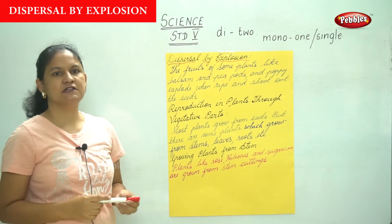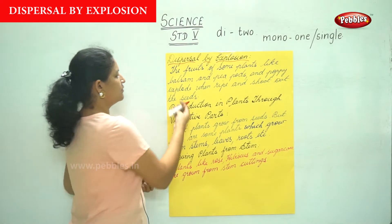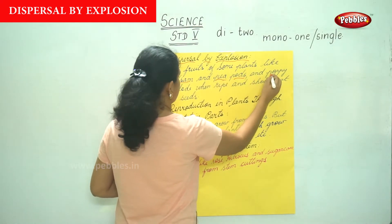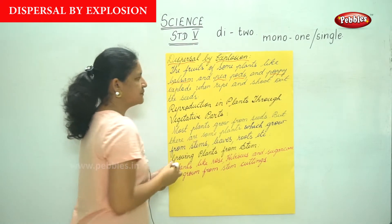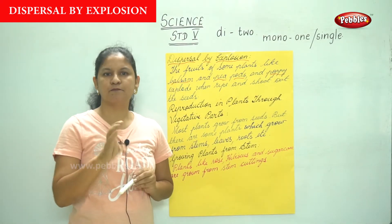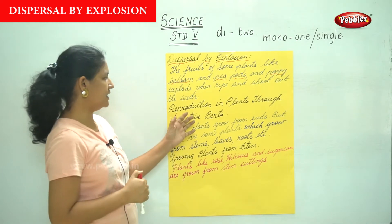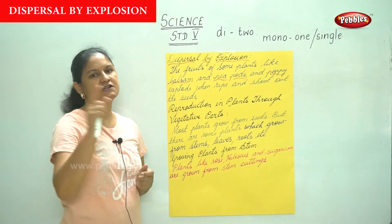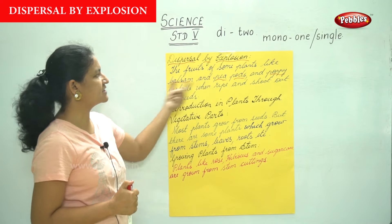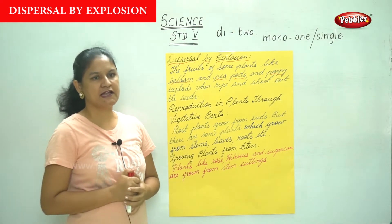The fruits of some plants like balsam, pea pods, and the poppy explode when ripe — they burst open and the seeds shoot out. So this is dispersal by explosion.